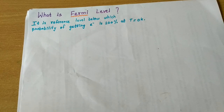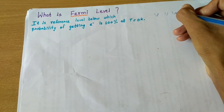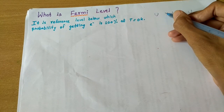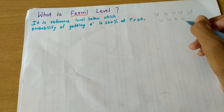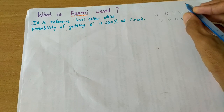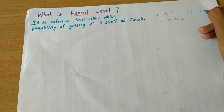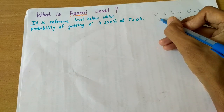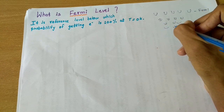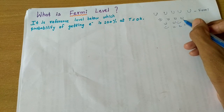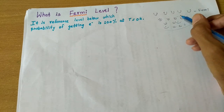Below the Fermi level the probability of finding electrons is 100%. We have finite quantum states as per our previous lectures. Let's say these are the states and this is the Fermi level — the reference level. Below this reference level, all the states, whatever their number, will be filled. That is, the probability will be 100%, or we can say probability will be one.